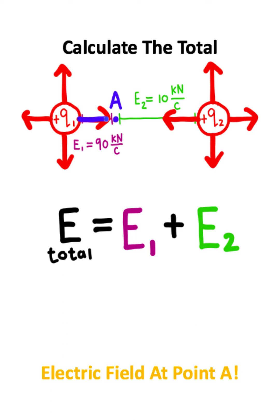Notice the electric field for the first charge points in the positive x direction. The electric field for the second charge points in the negative x direction with respect to point A. So we need to take this electric field and make it negative.